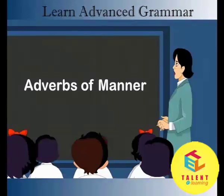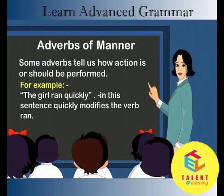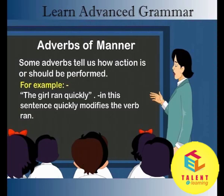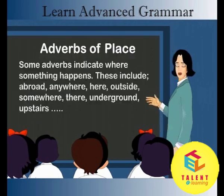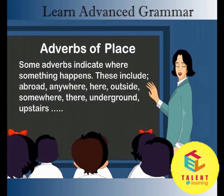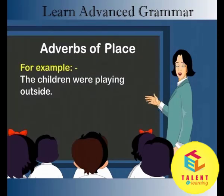Adverbs of manner. Some adverbs tell us how an action is or should be performed. For example: the girl ran quickly. In this sentence, quickly modifies the verb ran. Adverbs of place. Some adverbs indicate where something happens. These include abroad, anywhere, here, outside, somewhere, there, underground, upstairs. For example: the children were playing outside.